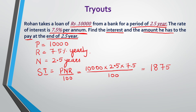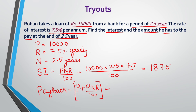Going back to our question, they have also asked us to find the total amount Rohan has to pay at the end of 2.5 years. Payback = P + (P×N×R/100) = 10,000 + 1,875 = Rs 11,875. So Rohan has to pay Rs 11,875 at the end of 2.5 years.